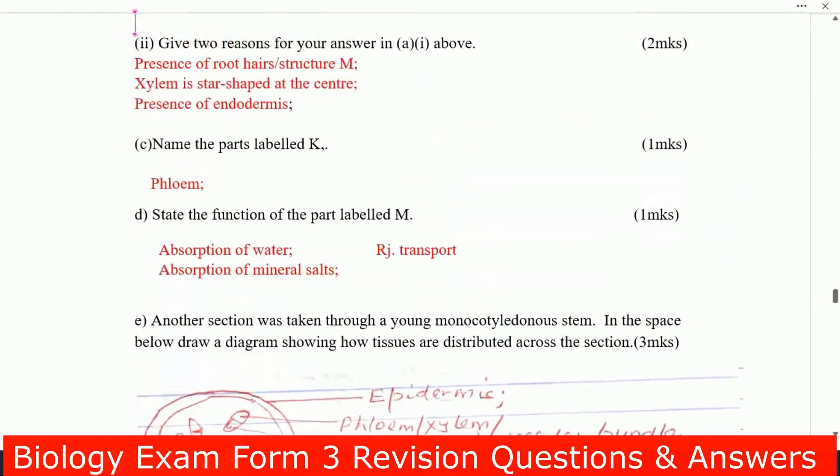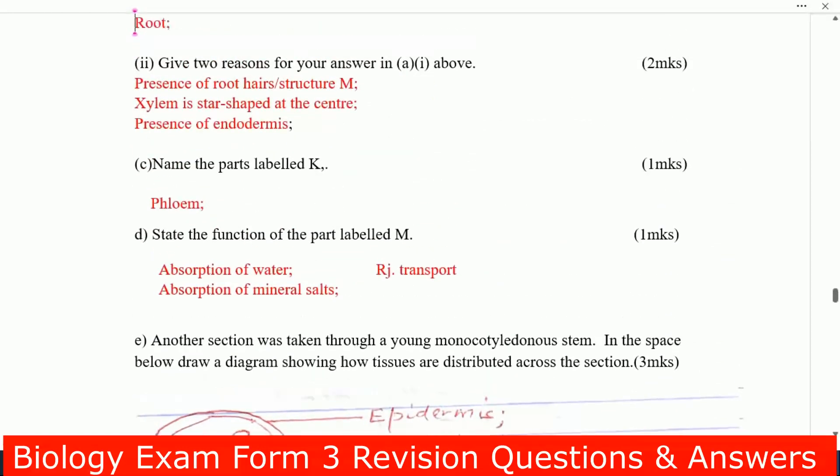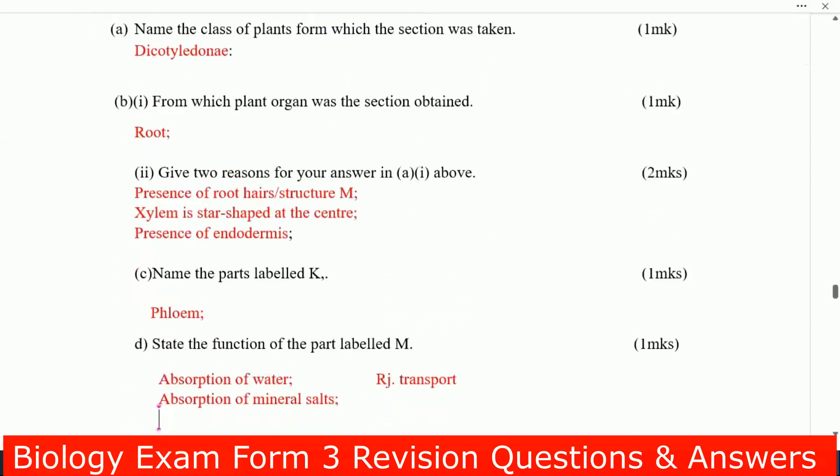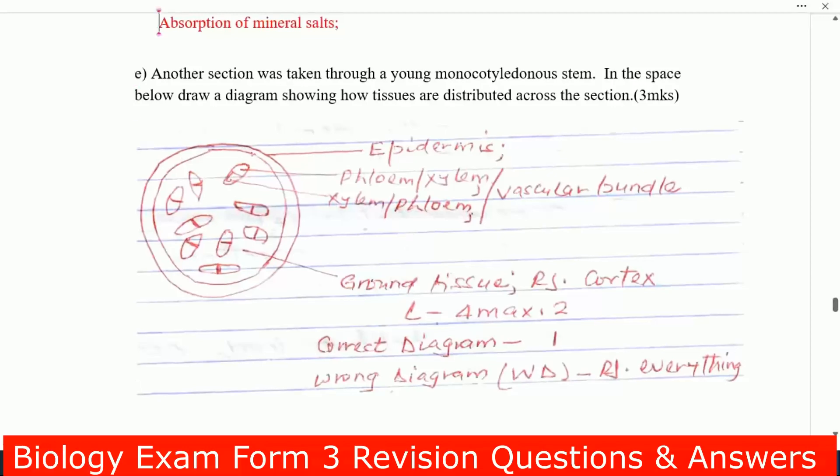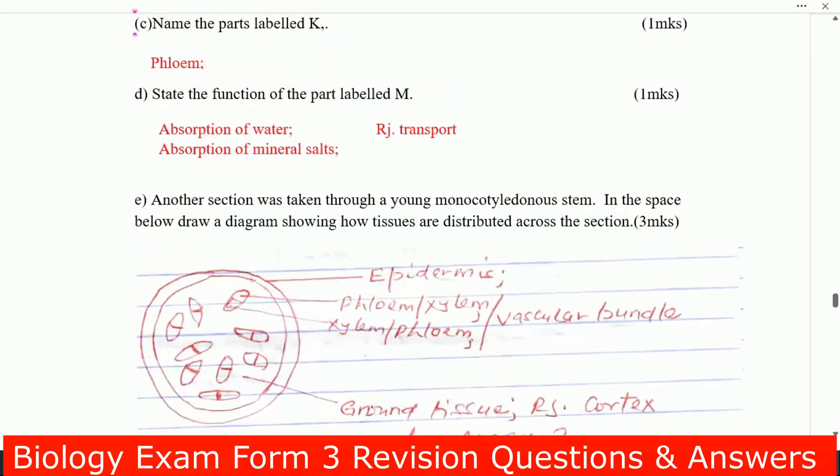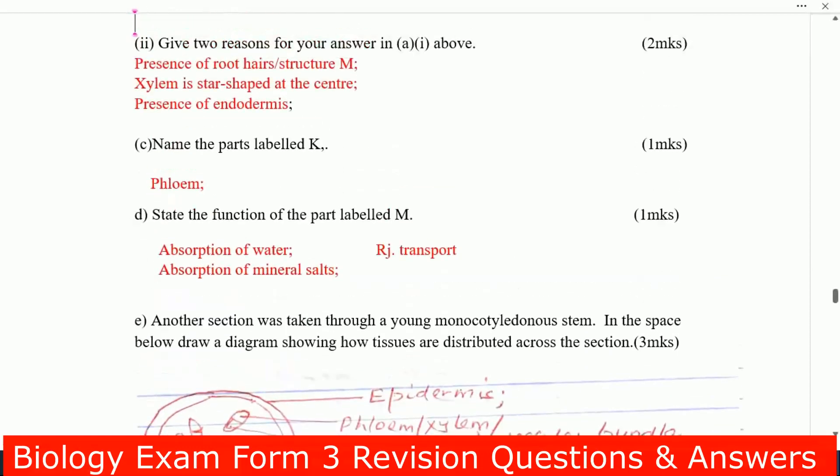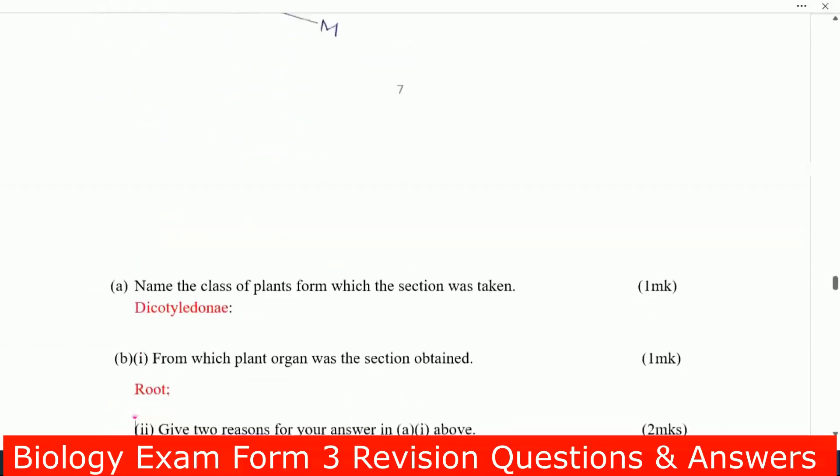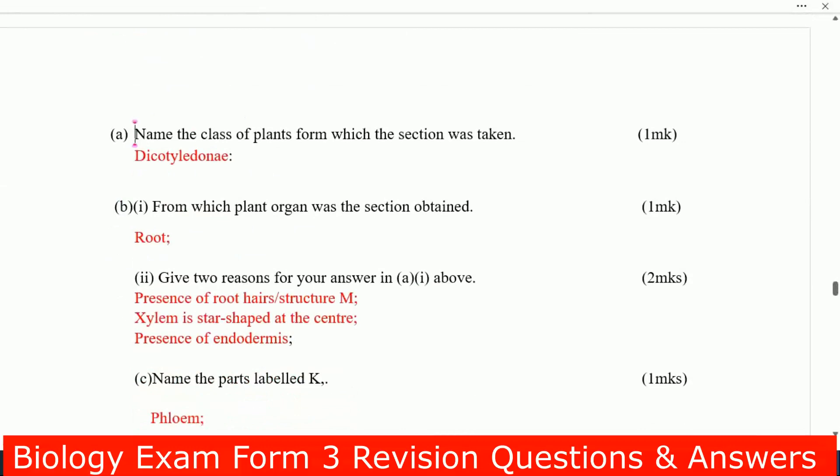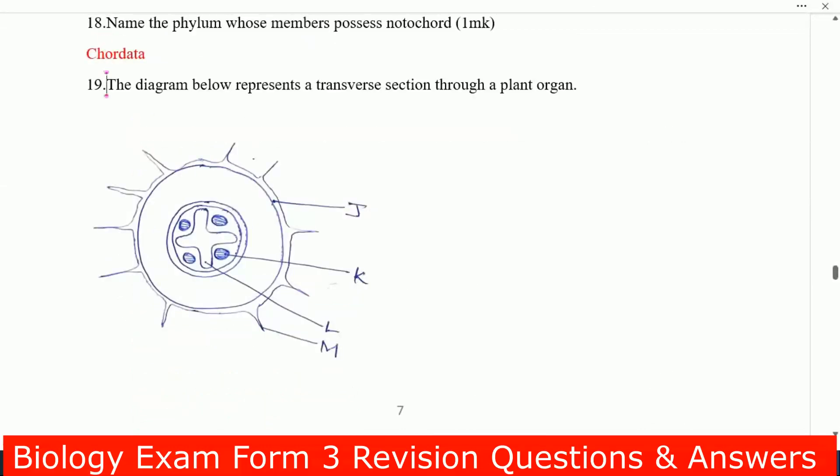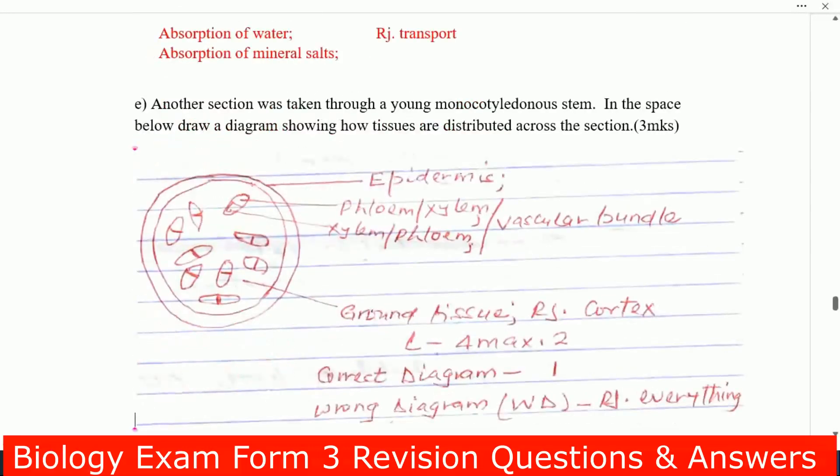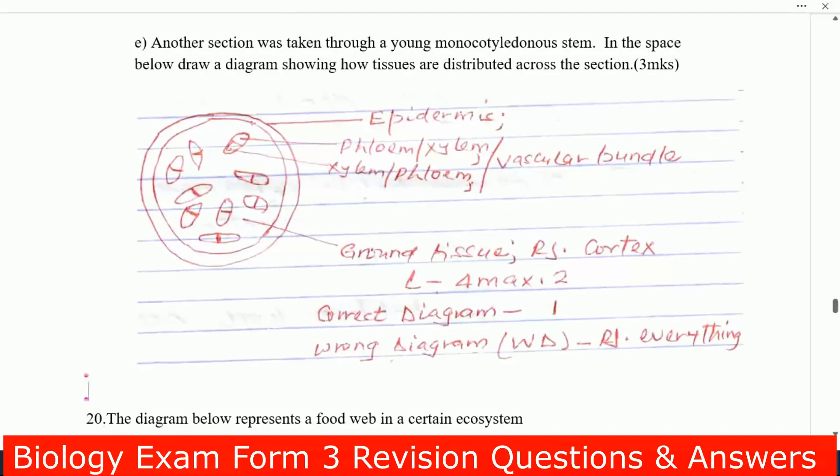Next, name the part labeled K. Part labeled K is phloem. State the function of the part labeled M. M is absorption of water and also absorption of minerals.